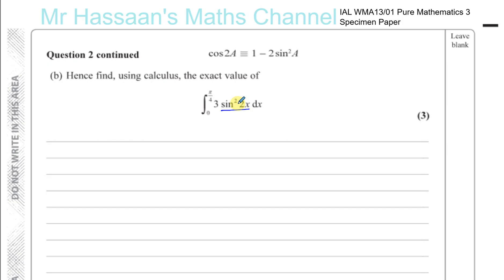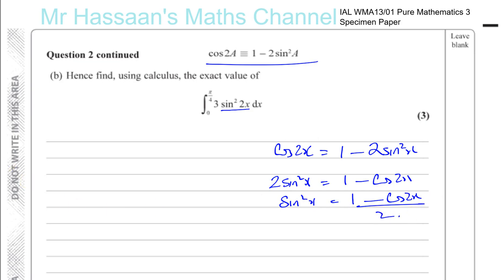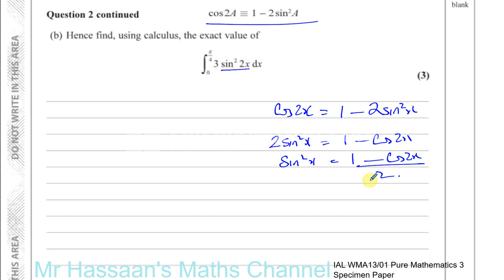We need to express it in terms of cosine 2x. Using what we just proved, cosine of 2x equals 1 minus 2 sine squared x. Rearranging to make sine squared x the subject: 2 sine squared x equals 1 minus cosine 2x, so sine squared x equals (1 minus cosine 2x) over 2. Now I can replace sine squared 2x with (1 minus cosine 4x) over 2.